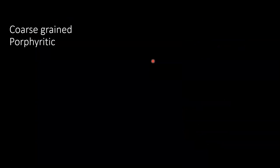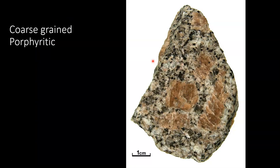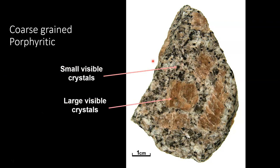With coarse-grained porphyritic, you can see both crystal sizes because it's coarse-grained and all of the crystals are visible. If all the crystals are visible in a specimen, that means it's coarse-grained. It's porphyritic if some are small and some are large — two distinct crystal sizes, all of which you can see. Some are small, some are large — that's the coarse-grained porphyritic.